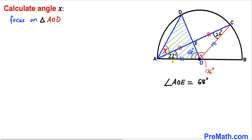Now let's focus on triangle AOE. Side length OA and side length OE are equal, since both are radii of this semicircle. Therefore this is an isosceles triangle. So since one base angle is X plus 22 degrees, the other base angle must also be X plus 22 degrees.